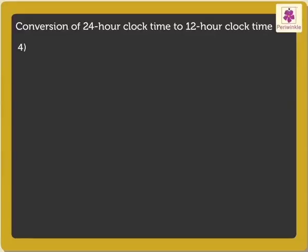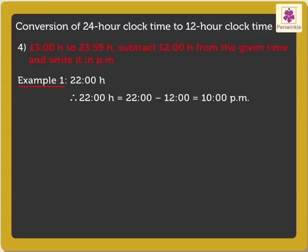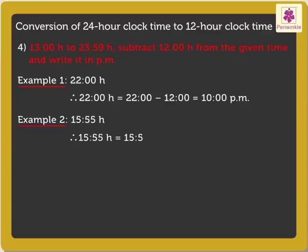For the time from 1300 hours to 2359 hours, subtract 1200 hours from the given time and write it in PM. For example, change 2200 hours to 12-Hour Clock time. 2200 hours is equal to 22 minus 12, which is equal to 10 PM. 1555 hours is equal to 3:55 PM.